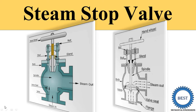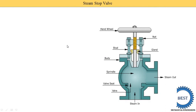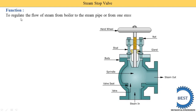In this video we cover the steam stop valve: its function, construction, and working. It is one of the mountings of various boilers. The function of the steam stop valve, as its name suggests, is to stop or control the flow of steam in a boiler.